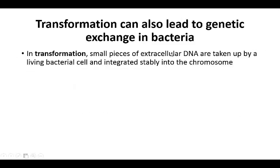Another way that bacteria can exchange genetic information is through transformation. In transformation, small pieces of extracellular DNA get taken up by a living bacterial cell and integrated stably into the chromosome. In the lab, we take advantage of this by shocking the cells — incubating them at cold temperatures, heating them to about 40–42 degrees Celsius, which causes tiny pores or holes to form in the bacterial cell, allowing the uptake of small pieces of DNA. When cooled back down, the holes close and the DNA is stably integrated into the chromosome.